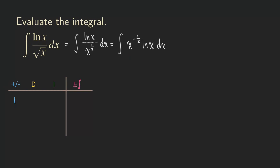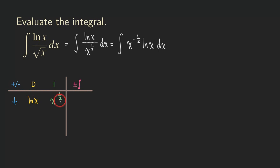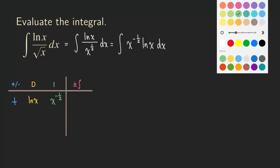For the first row, we put the sign, and we place ln(x) in the differentiation column. The integration column gets x to the negative 1/2. In the note column, we multiply everything together: positive 1 times ln(x) times x to the negative 1/2 dx — which gives us back the original integral.